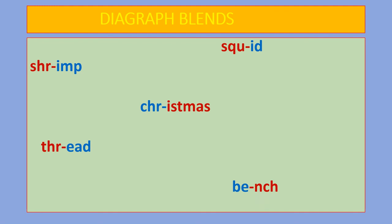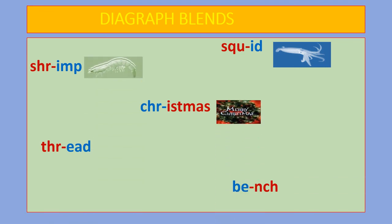For bench, the NCH is found at the end. Normally the NCH blend is used at the end of words like bench and lunch. So these blends, when combined, form words like squid, shrimp, Christmas, thread, and bench.